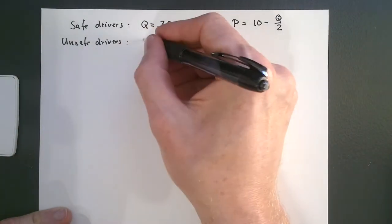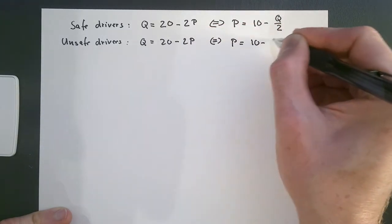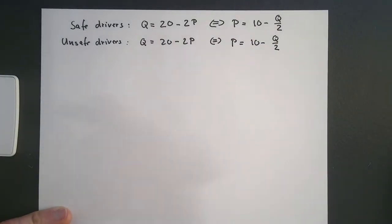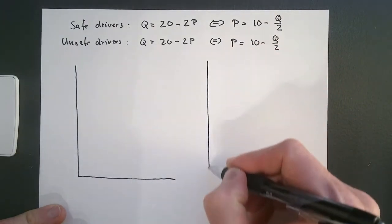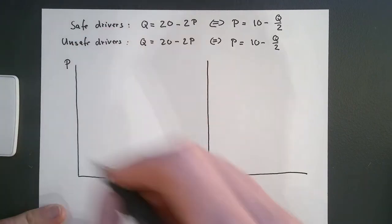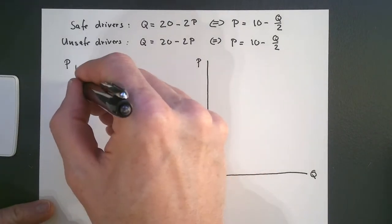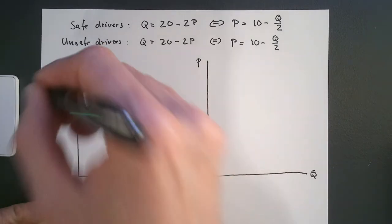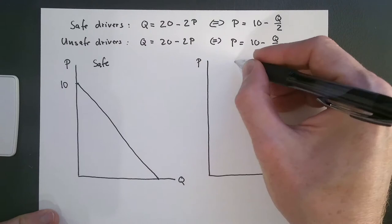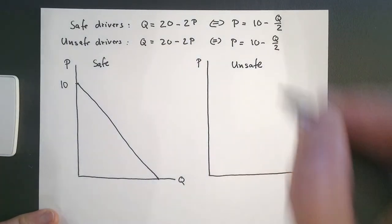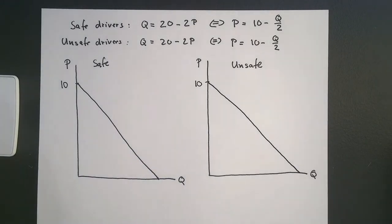Note that unsafe drivers have the exact same demand function. We can draw this for both types of drivers. We have P and Q axes. Here we have the safe drivers and here we have the unsafe drivers, and the demand function starts at 10. So here we have the demand function for the two drivers.